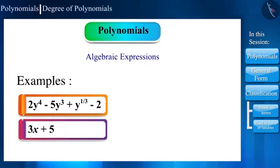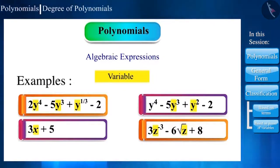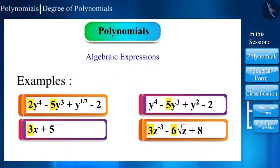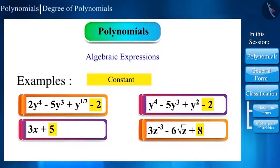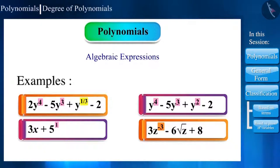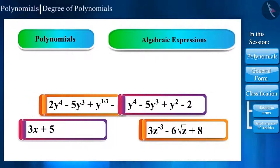In the given expressions, X, Y and Z are called variables. Numbers associated with these variables are called coefficients, and the numbers whose values are fixed are called constants. Now if we focus on the powers of these variables, these can be positives, negatives, and fractions.